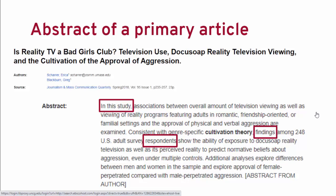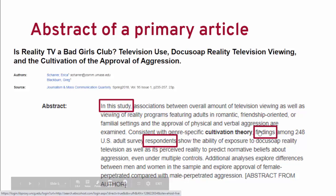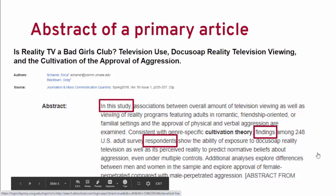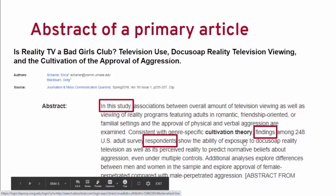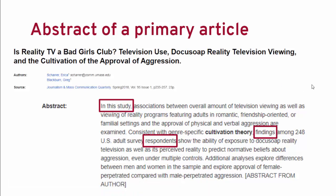The abstract starts with the phrase 'in this study,' which is right off the bat a clear indicator that this is going to be about a study that the authors, Sharer and Blackburn, actually conducted themselves. I also pulled out the terms 'findings' and 'respondents' — from a sentence that says 'findings among 248 US adult survey respondents show the ability of exposure to docu-soap reality television...' These terms give me a clearer sense of what kind of study it was — they must have created and deployed a survey or questionnaire.